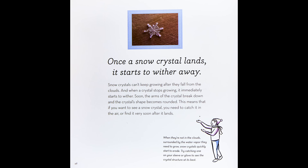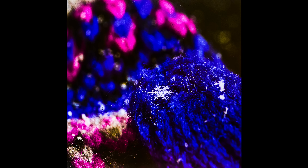Once a snow crystal lands, it starts to wither away. Snow crystals can't keep growing after they fall from the clouds, and when a crystal stops growing, it immediately starts to wither. Soon, the arms of the crystal break down and the crystal's shape becomes rounded. This means if you want to see a snow crystal, you need to catch it in the air or find it very soon after it lands. When they're not in the clouds, surrounded by the water vapor they need to grow, snow crystals quickly start to erode. Try catching one on your sleeve or glove to see the crystal structure at its best.